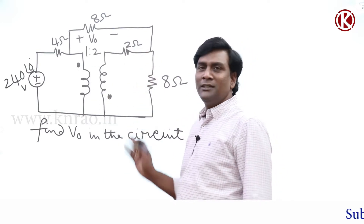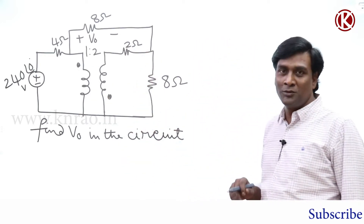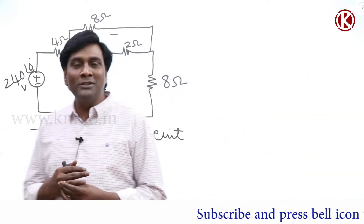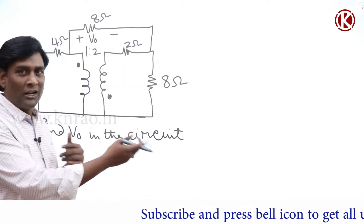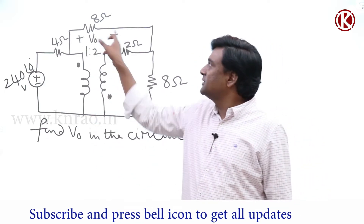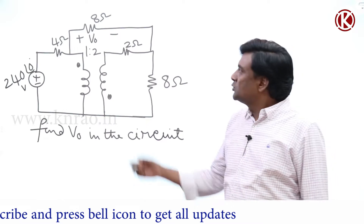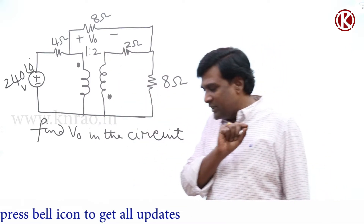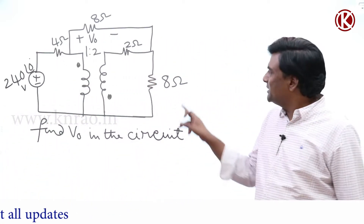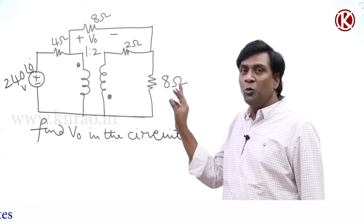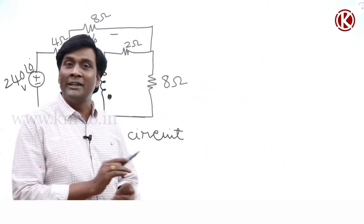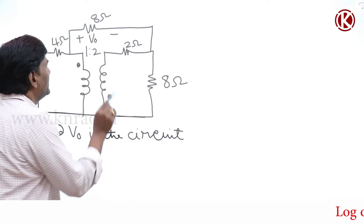In this problem, by seeing this, it is network theory transformers — not machine's transform. They have chosen numbers in such a way that immediately after solving this problem the question will become very simple. They asked V naught, which is the voltage across resistance. It is actually a very simple problem — just by calculating one equation we will be able to get the answer. But if I change this 8 ohms to 5 ohms, the problem length will be increased significantly. So this problem can definitely come in GATE.